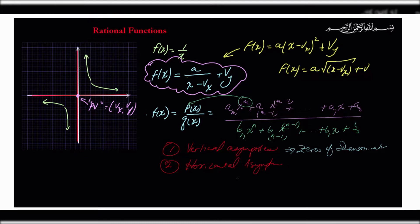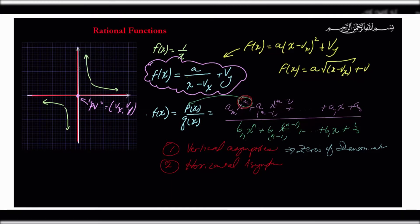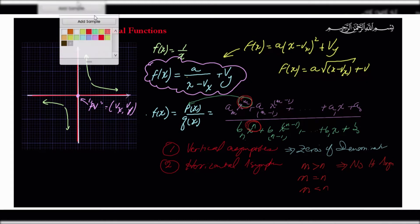For horizontal asymptotes, this scenario is trickier. To find the horizontal asymptotes, you have to compare the degree of the numerator m to the degree of the denominator n. When you compare the degrees, there are three possibilities: m is greater than n, m equals n, or m is less than n. If m is greater than n, this means there are no horizontal asymptotes.